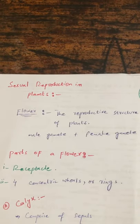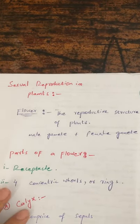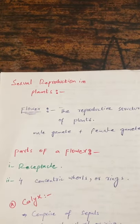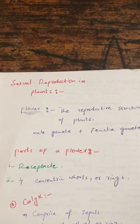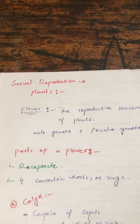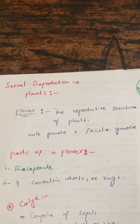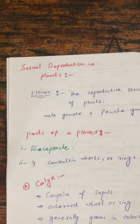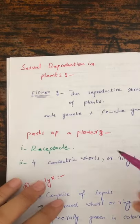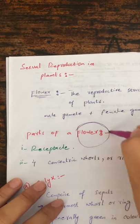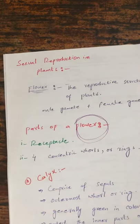Assalamualaikum warahmatullahi wabarakatuh. As we talk about sexual reproduction in plants, remember the reproductive structure of the plant is the flower, while the vegetative part is the remaining part — that is the root, stem, and leaves. So as we talk about the reproductive part, that is the flower. Basically, the flower is the reproductive part of a plant.